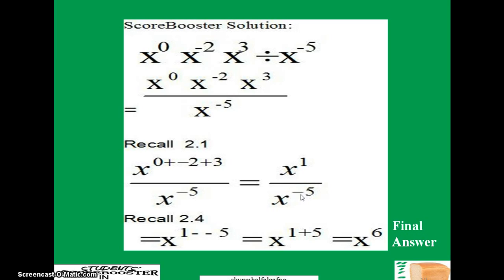Now we recall law 2.4. That is, division is minus. So you have 1 minus minus 5, and that will equal x raised to power 1 plus 5, and x raised to power 6. That is all. You have one point.